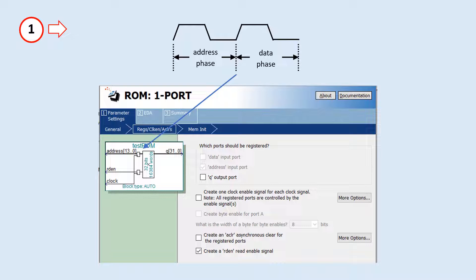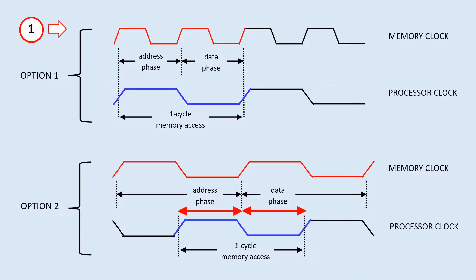Currently I'm using FPGA internal memory for system ROM and RAM implementation. For the Cyclone FPGA series, the internal memory access is two-cycle. Here's a snapshot from the IP builder tool. Conceptually, there's always a flip-flop at the address or control input, so you can think of the access as a two-phase operation — the first phase is the address or control phase, and the second phase is the data phase. There could be two options to get around this, sort of.